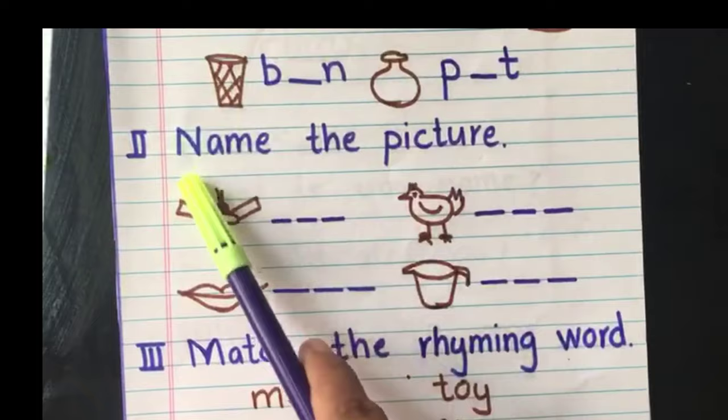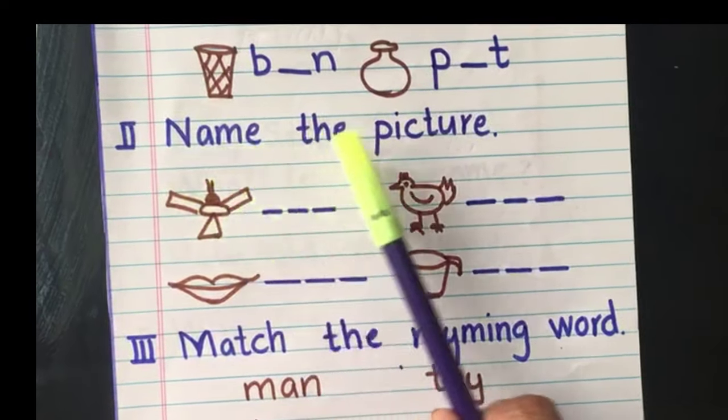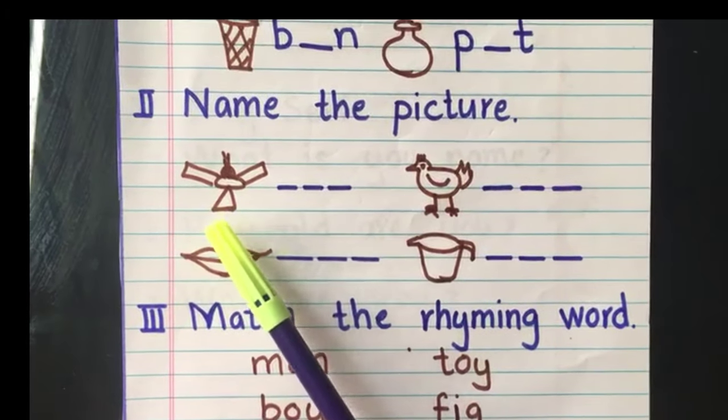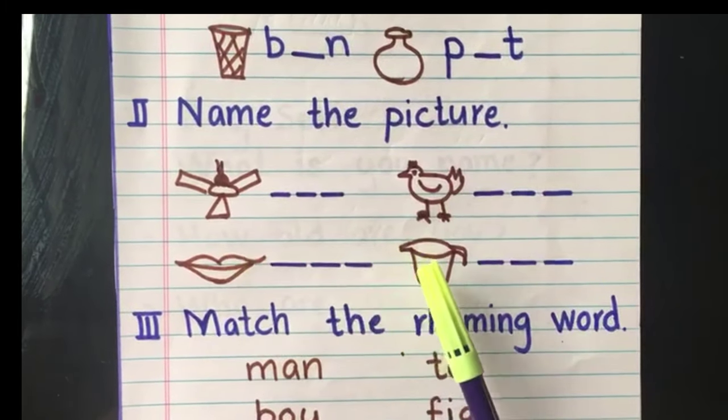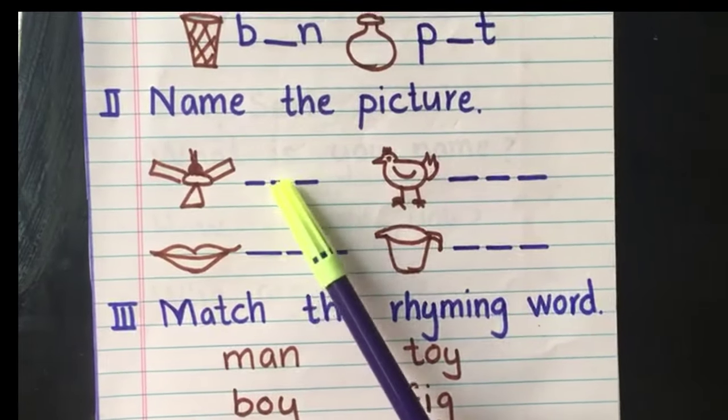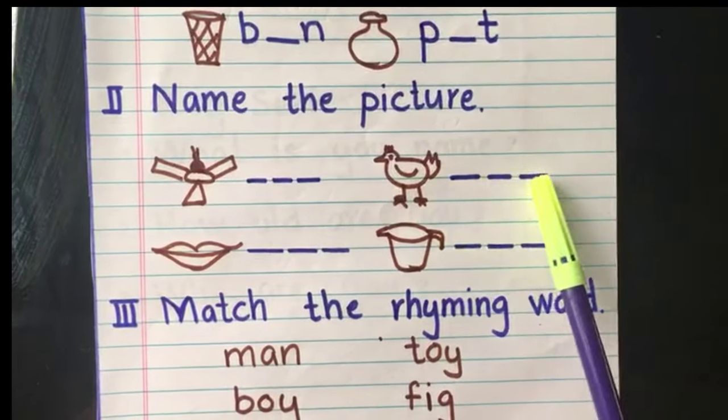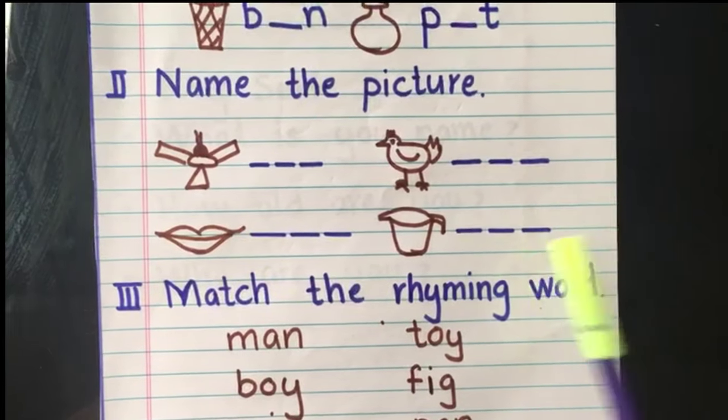The second question is, name the picture. I have given a picture of fan, hen, lip and a mug. Child should find out the picture and write the spelling which is given below. I have given only three dashes so that the child can fill easily. It's all three letter words. I hope the pictures are easy to identify.